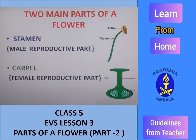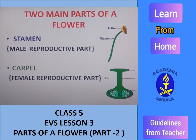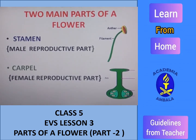So these are the two main parts of a flower. First is stamen, which is called the male reproductive part. Second is carpel, which is also called the female reproductive part. Now let's discuss these two parts in detail.